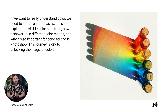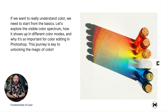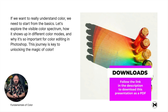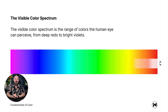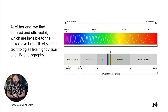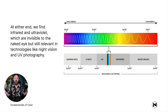If we want to really understand color, we need to start from the basics. Let's explore the visible color spectrum, how it shows up in different color modes, and why it's so important for color editing in Photoshop. This is the visible spectrum — a range of colors that the human eye can perceive, from deep reds to bright violets. At either end, we find infrared and ultraviolet, which are invisible to the naked eye but still relevant to technologies like night vision and UV photography. If you look at the full spectrum of waves, you can see that the visible spectrum is quite small compared to all the waves that exist.